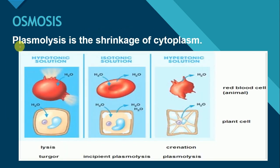There is another term: plasmolysis. What is plasmolysis? Plasmolysis is the shrinkage of cytoplasm. Jab hum cells ko hypertonic solution mein place kerti hai, either that is animal cell or plant cell, to hypertonic solution mein rakhne ki wajah se, water will excrete out from the cell. Paani ke cell se nikal jane ki wajah se, cytoplasm will shrink. Isi shrinkage of cytoplasm ko hum bolte hai plasmolysis.